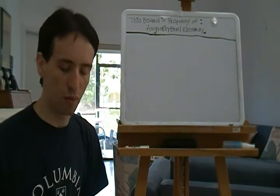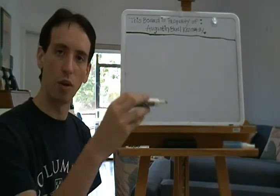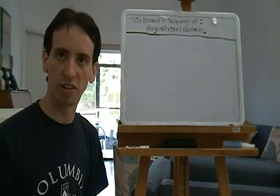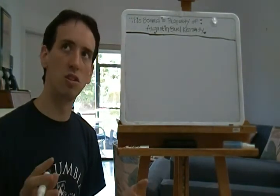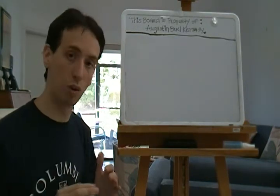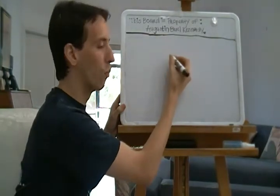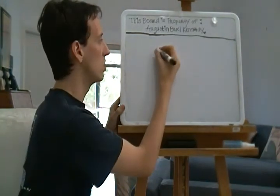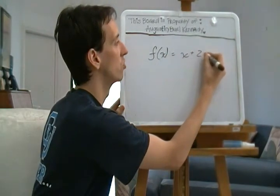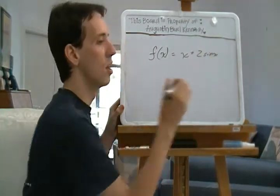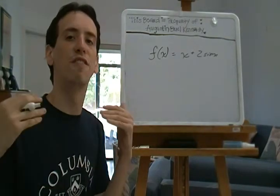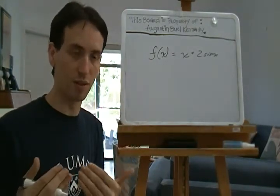Hopefully you remembered that when we went over the trigonometric functions last time, we graphed them and drew horizontal tangents at some points. A tangent line has a slope of 0, so what we're looking for is the values where f(x) = x + 2 sin(x) has a tangent slope of 0. Basically, we need to find when the derivative is 0.